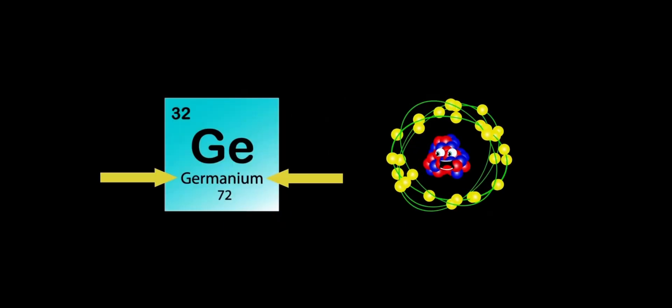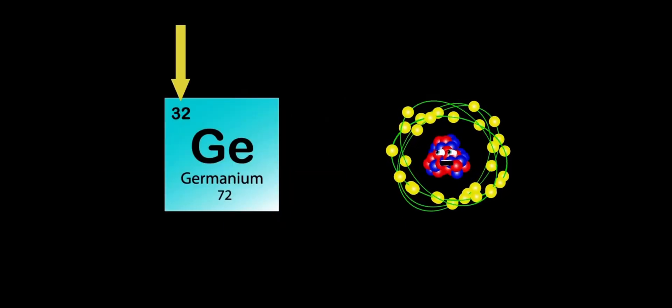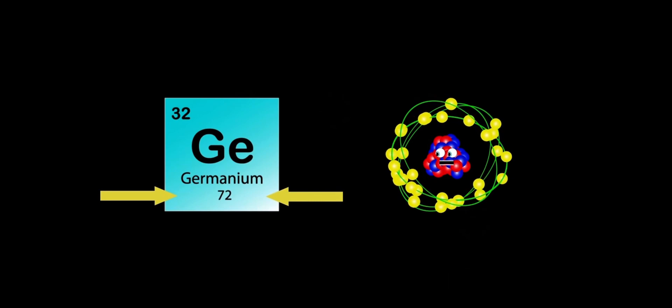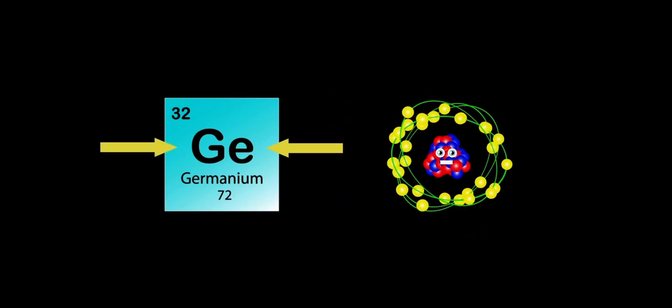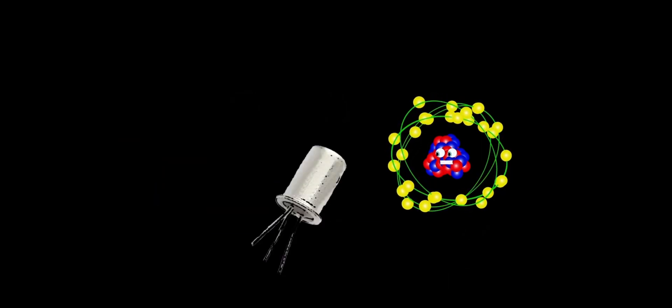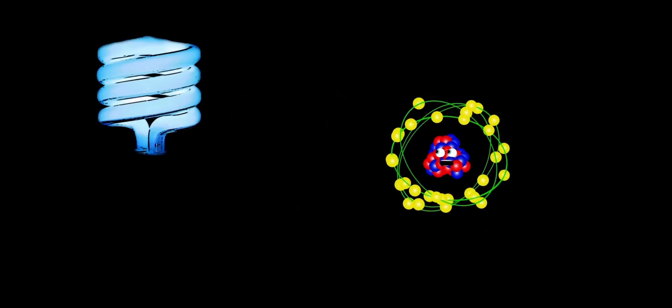I am Germanium, my atomic number is 32, my atomic mass is 72, Ge is my symbol, it's true. I'm used to make transistors for use in electronic devices. Also used to create alloys and phosphors for fluorescent lamps.